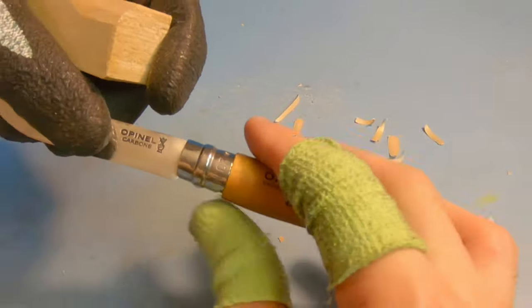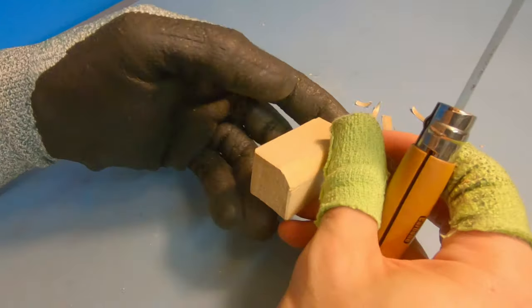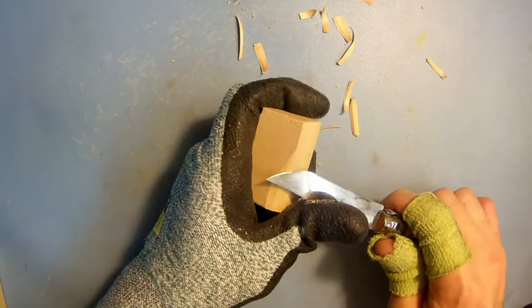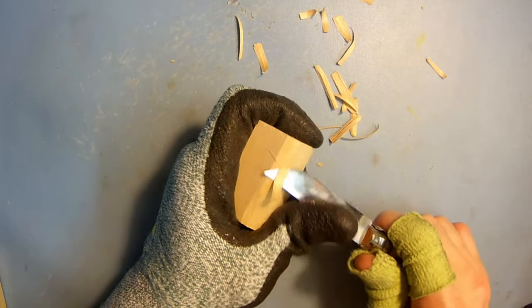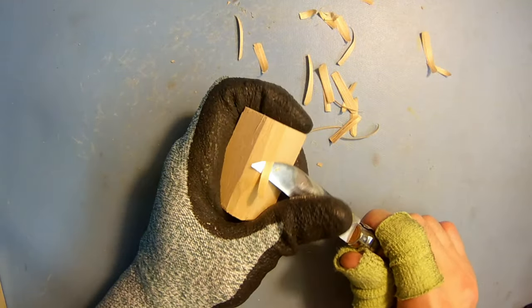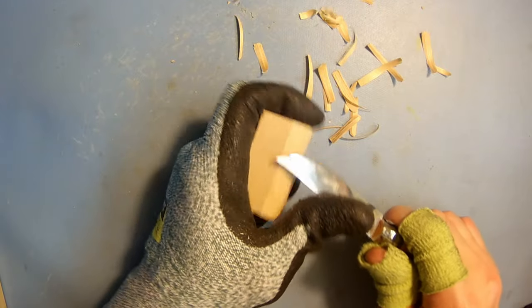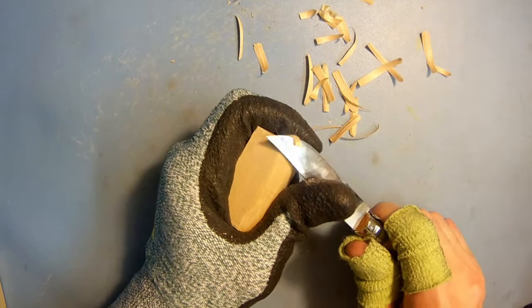If it doesn't say carbon, it's their general purpose steel and it's a bit softer. It won't hold up to the abuse that whittling and woodcarving will put it through. You want to get the carbon one as they'll have much longer edge retention.